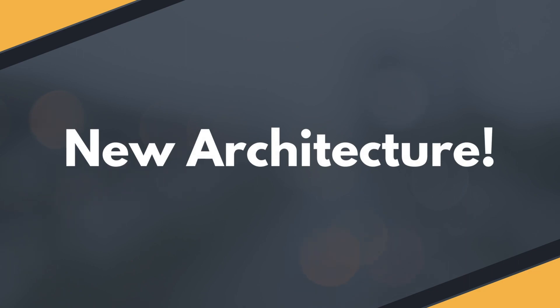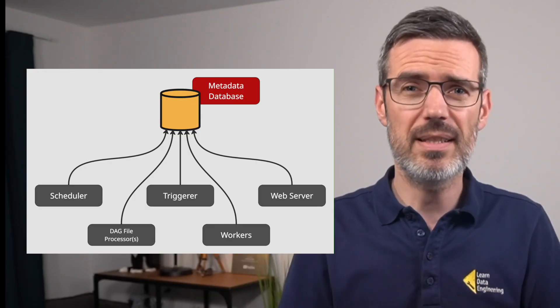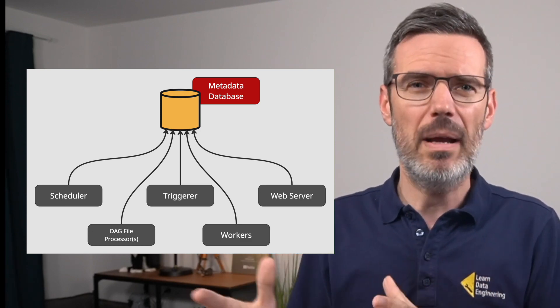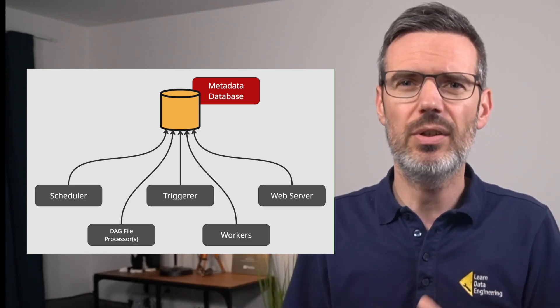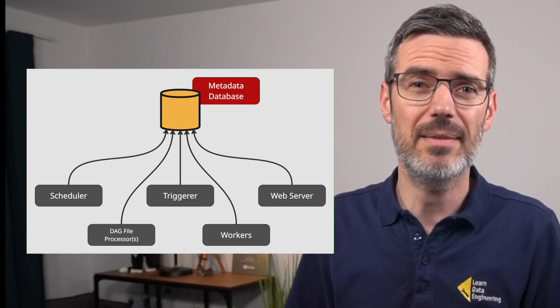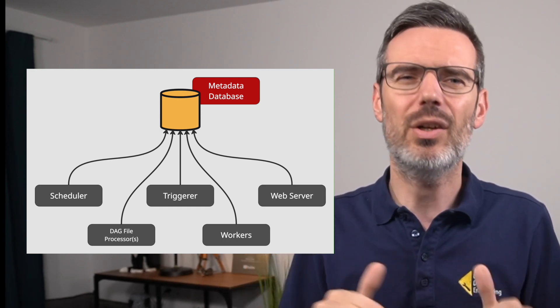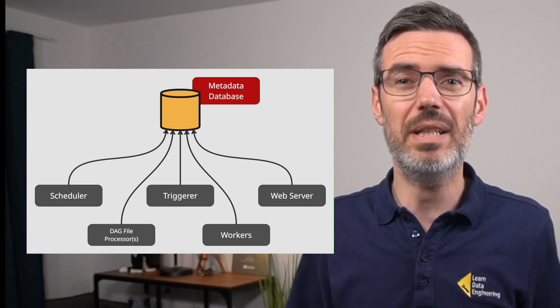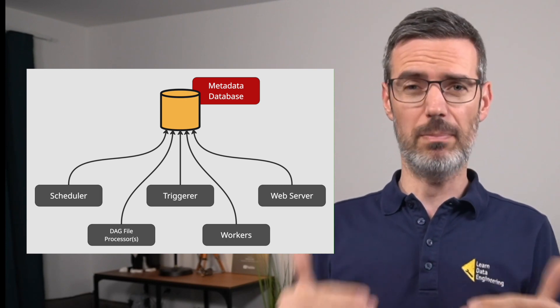Let's start with what I think is the most important change in Airflow 3.0: the architecture has been completely redesigned. So what was the problem? In Airflow 2.x and earlier, all components — the scheduler, web server, worker, triggerer, and DAG file processor — talked directly to the metadata database. That setup came with a lot of limitations, especially when deploying Airflow in more complex environments.